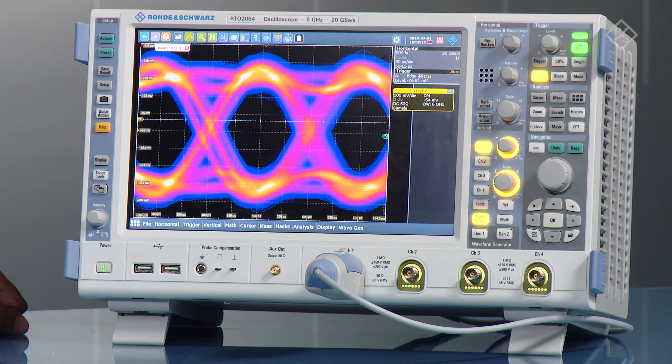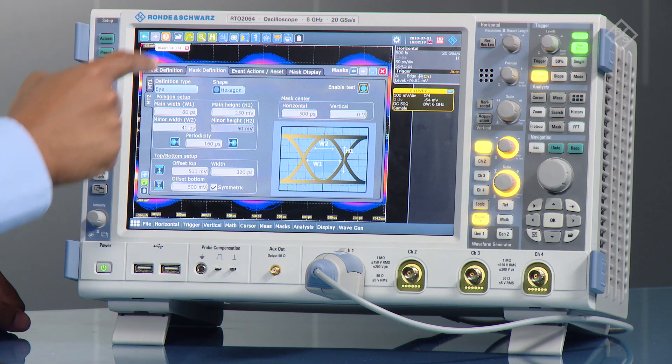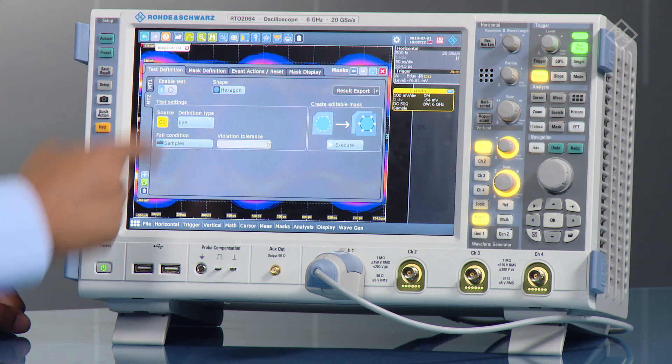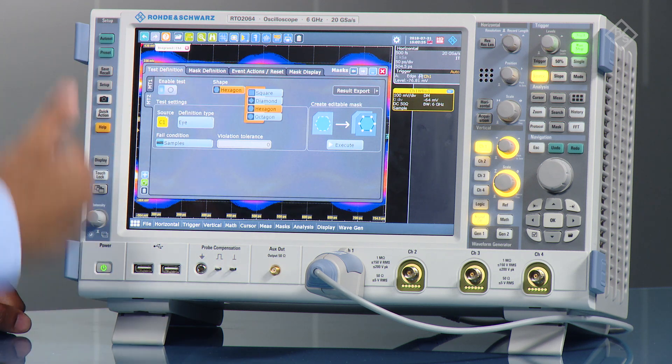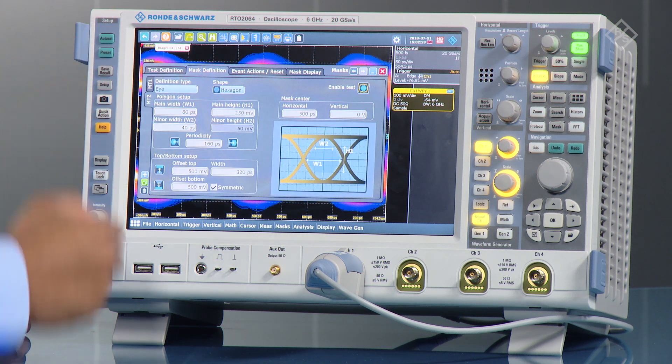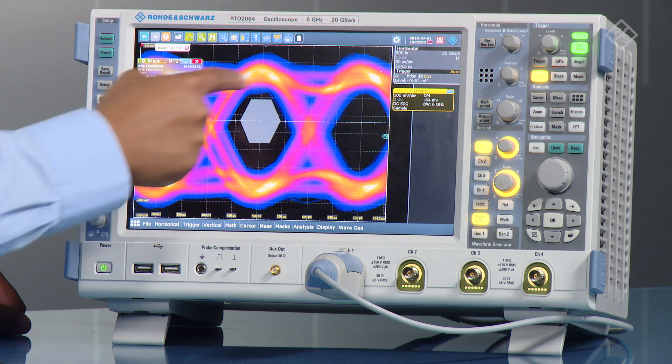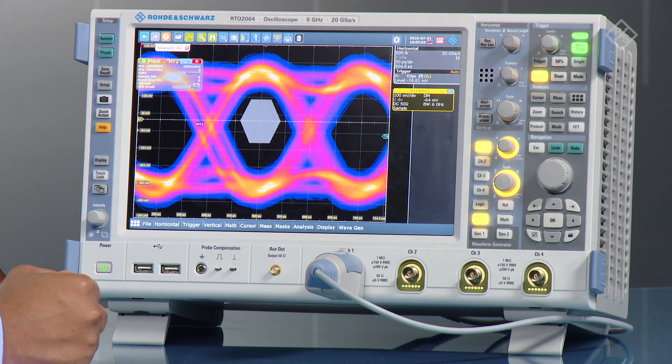Now to set up a mask, you have the mask tool here, and under the test definition you can define what kind of shape you want depending on the standards—either a square, diamond, or hexagon. For this example I've set up a hexagon, and I can just enable the test. In the background you see this is already predefined, and I can set that up.